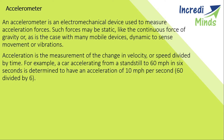Now we will see how it works. The accelerometer sensor measures acceleration by measuring the change in capacitance. Its structure has a mass attached to a spring, which moves along one direction, and has fixed outer plates. When acceleration is applied in any direction, the capacitance between the plates and the mass will change. This change in capacitance is measured and corresponds to the acceleration value.